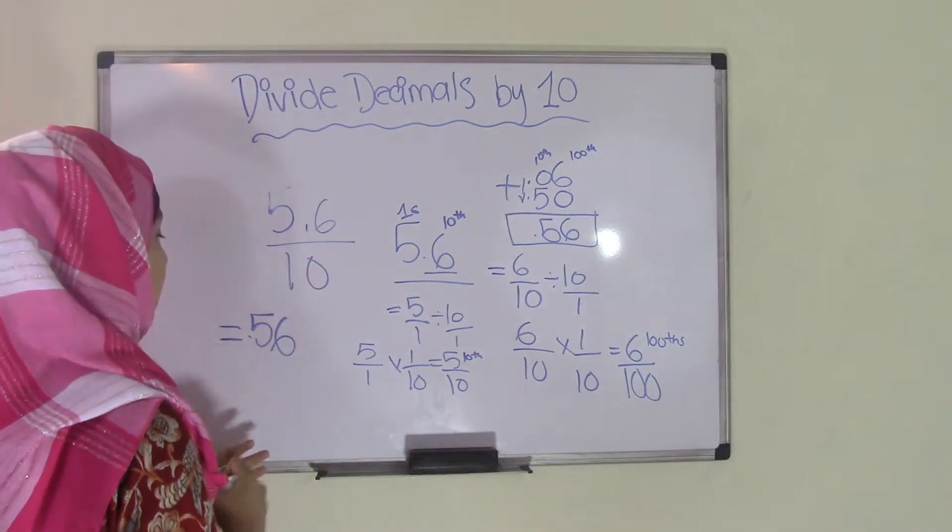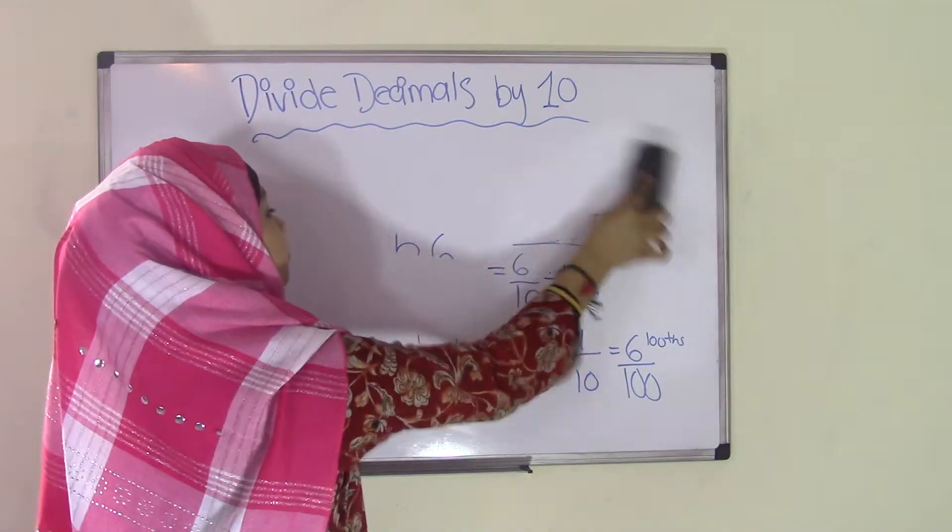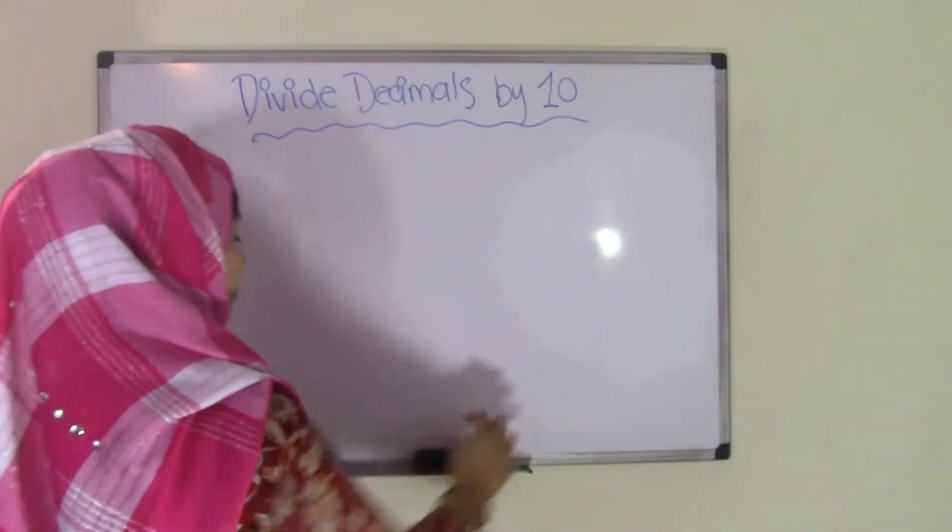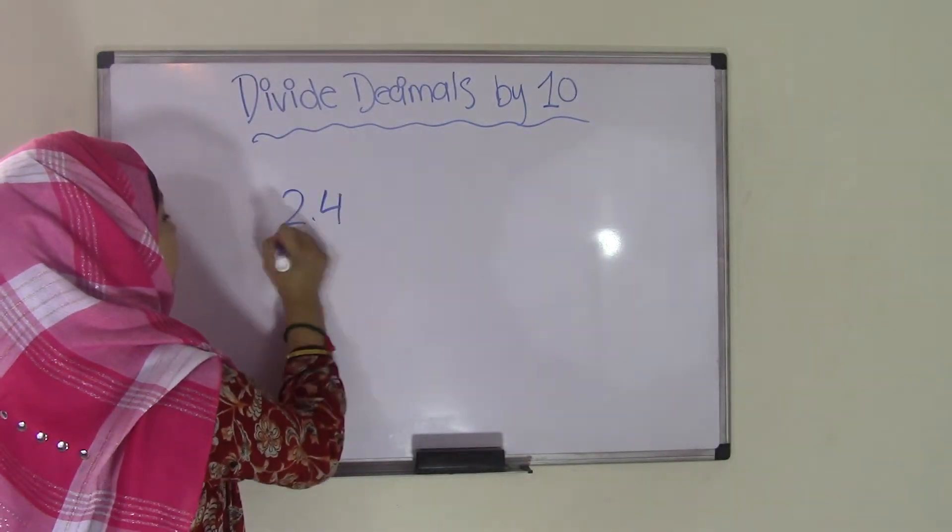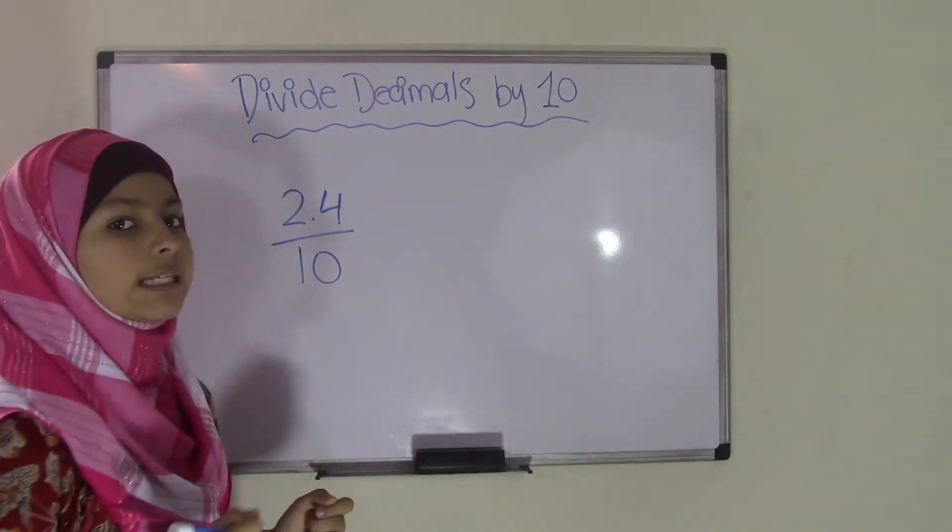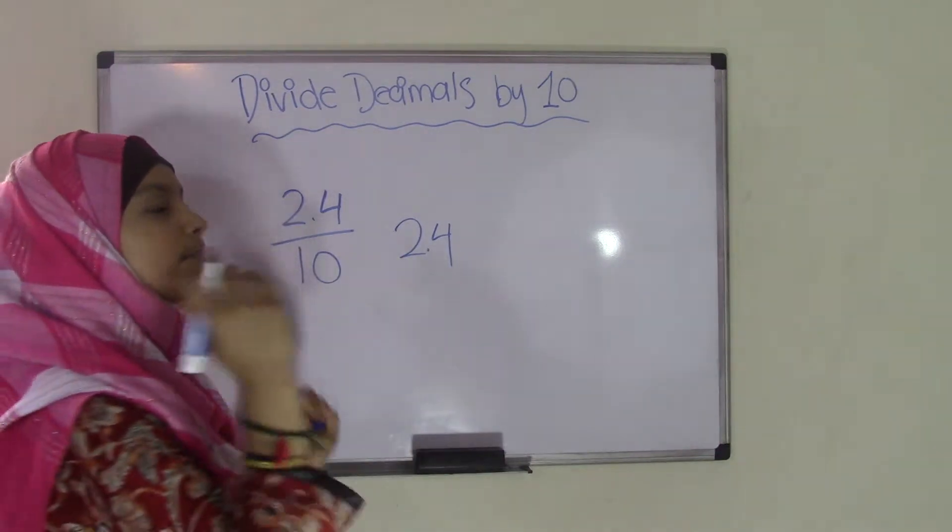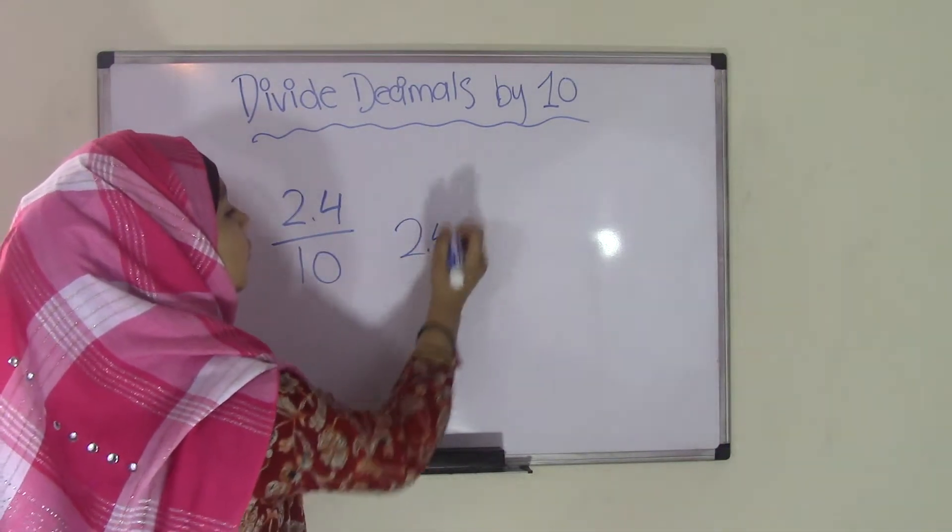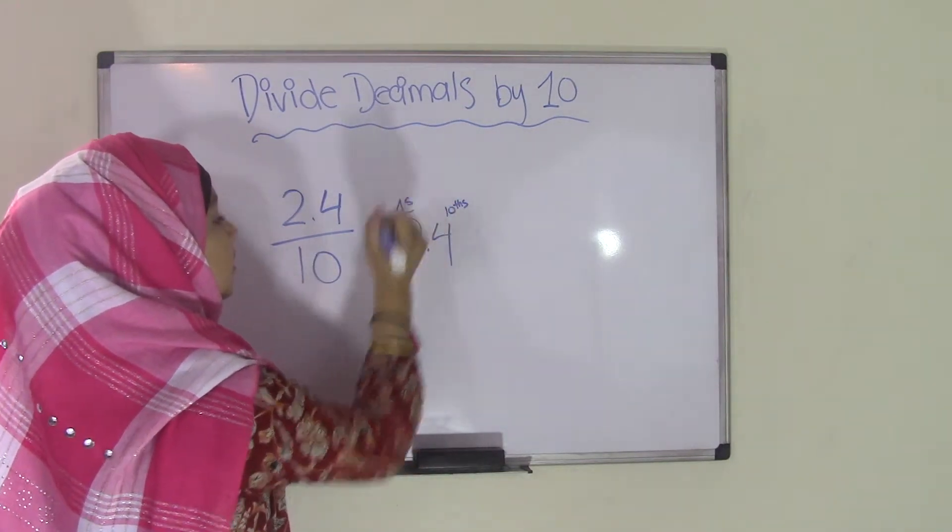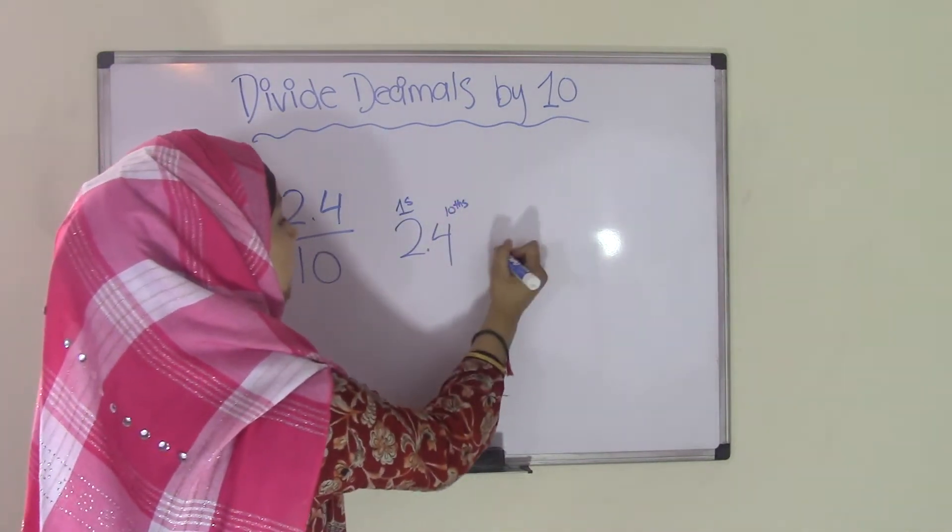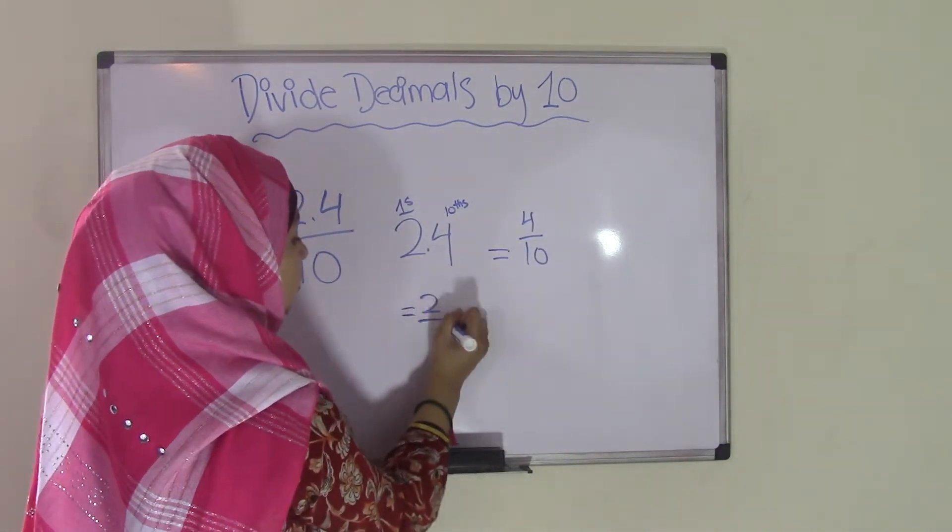Let's say we have another problem, such as 2.4 divided by 10. So once again, we write our decimal number 2.4. We write the place value for each of them. So 0.4 is in the tenths place, and the 2 is in the ones place. So 4 tenths could be written as 4 over 10, and the 2 ones could be written as 2 over 1.